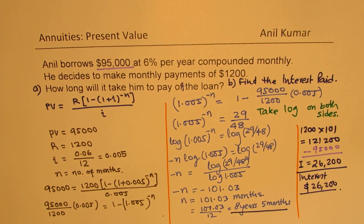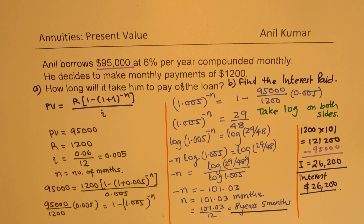Do you understand? That is how much interest you pay when you take a loan, especially at 6% per year compounded monthly. I hope you have understood the concept. Feel free to write your comments and share your views. We'll take up the next example based on mortgage — a similar concept — and I hope both examples combined will help you understand the topic of annuities, especially when considering present value. Thanks for your time, and all the best.